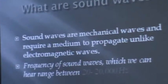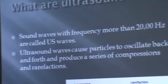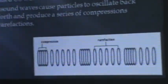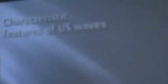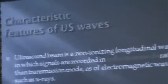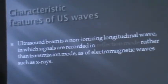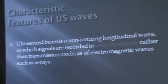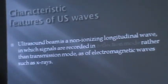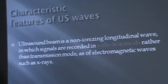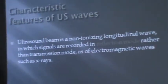The frequency of sound waves is between 20 to 20,000 Hertz, and that of ultrasound waves is more than 20,000 Hertz. The ultrasound beam consists of non-ionizing longitudinal waves in which the signals are recorded in reflection mode, rather than in transmission mode as with electromagnetic waves such as X-rays. The ultrasound transducers generate waves that enter the body and get reflected from various body tissues, and we make the picture by means of this reflection.